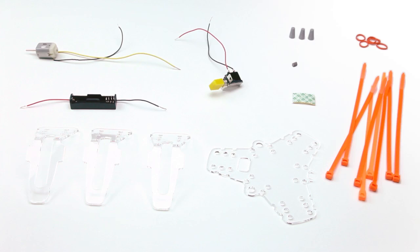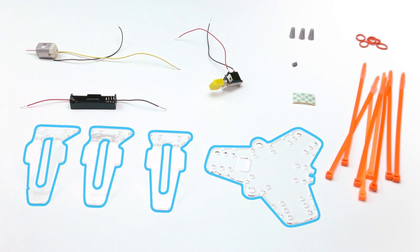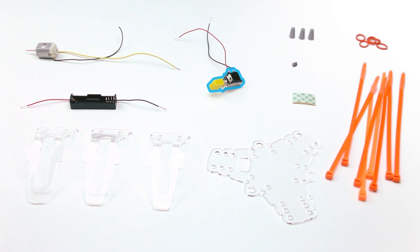You'll build your SpinBot out of plastic body and legs, a motor, a switch, a battery box, wire nuts, foam tape, zip ties, rubber bands, and a rubber wheel. To make it spin and draw, you'll need markers and a AA battery.